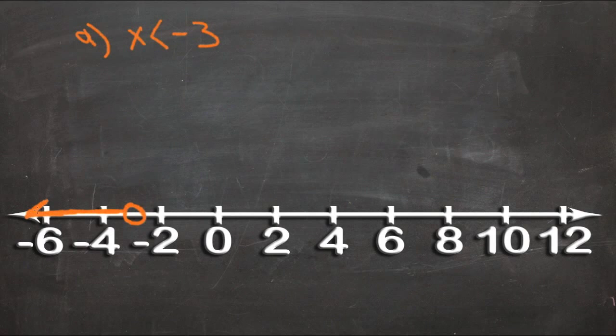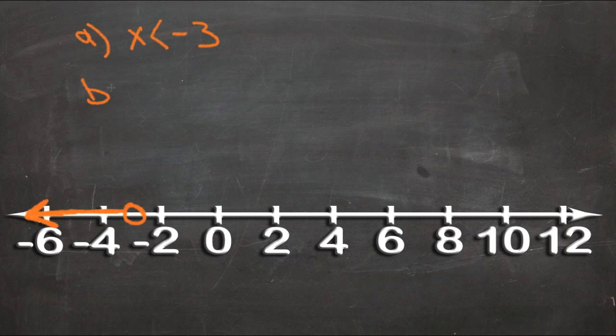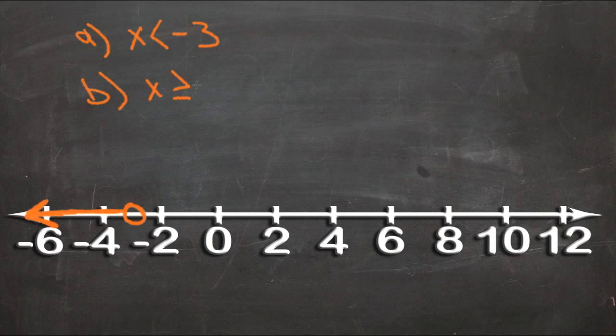So now we've graphed what x could be, and we've graphed A. Now for B, we have x is greater than or equal to 6. So now x can be 6—it can be equal to it—so we're actually going to draw a circle at 6 first of all because x can be 6.